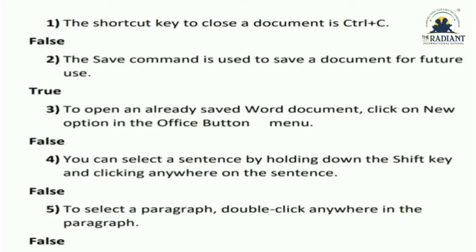Number four: you can select a sentence by holding down the shift key and clicking anywhere on the sentence. What it is saying is that to select a sentence we press shift key and click anywhere. But we have to do it at the beginning of the line, so it is false.